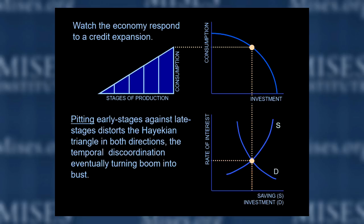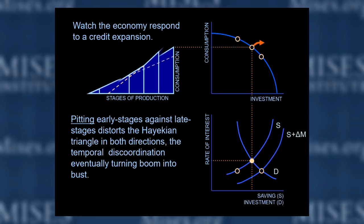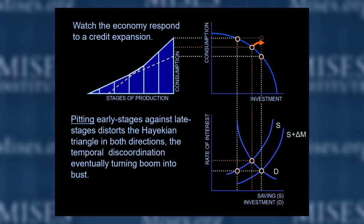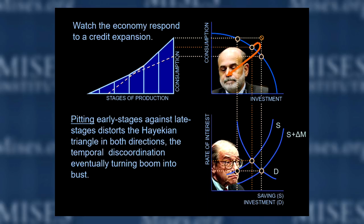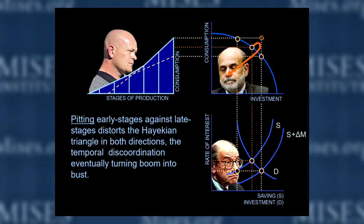Padding the supply of loanable funds with new money drives a wedge between saving and investment. Papering over the difference between saving and investment gives play to a tug of war between consumers and investors. Pitting early stage against late stage distorts the Hayekian triangle in both directions, the temporal discoordination eventually turning boom into bust. Watch the economy respond to credit contraction. Thank you.